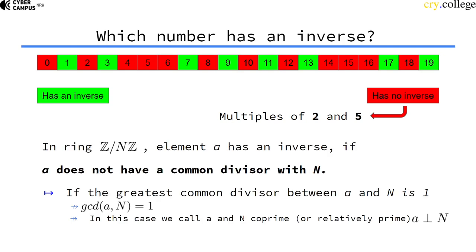In a ring, an element has an inverse if it does not have a common divisor with N. If the greatest common divisor between the element and the modulus is 1, meaning they don't have any divisor in common, then the element a has a multiplicative inverse modulo N. If the greatest common divisor is 1, we call those numbers coprime. Sometimes they're called relatively prime.